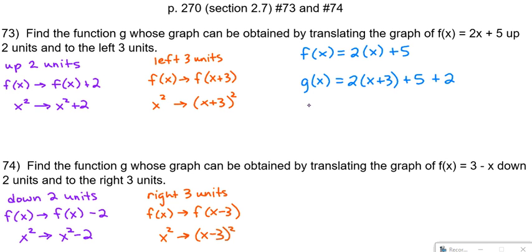And the last thing we need to do is simplify. So suppose we distribute the 2 and combine the like terms. We will have our answer, g of x equals 2x plus 13.